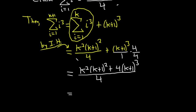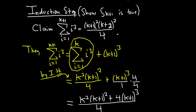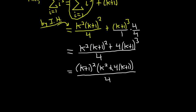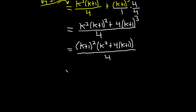We're trying to get to the claim, so knowing where you're going is super important. Here we can factor out k plus 1 squared: that gives us k plus 1 squared times k squared plus 4 times k plus 1, all over 4. Distributing the 4: k plus 1 squared times k squared plus 4k plus 4, all divided by 4.